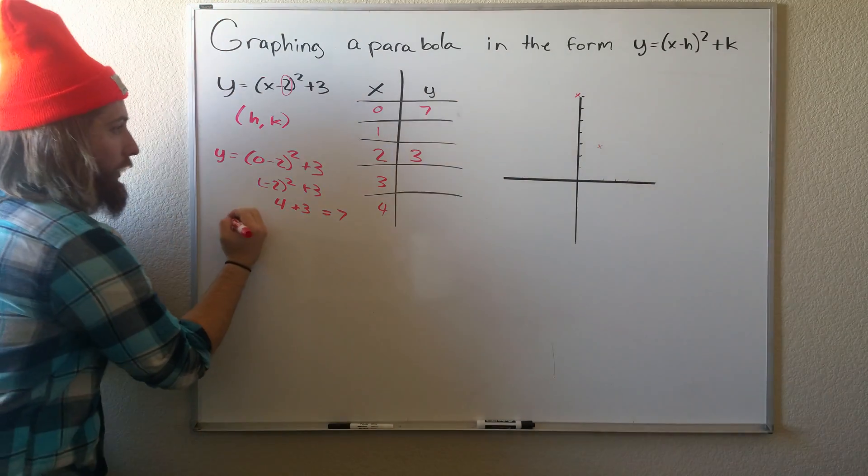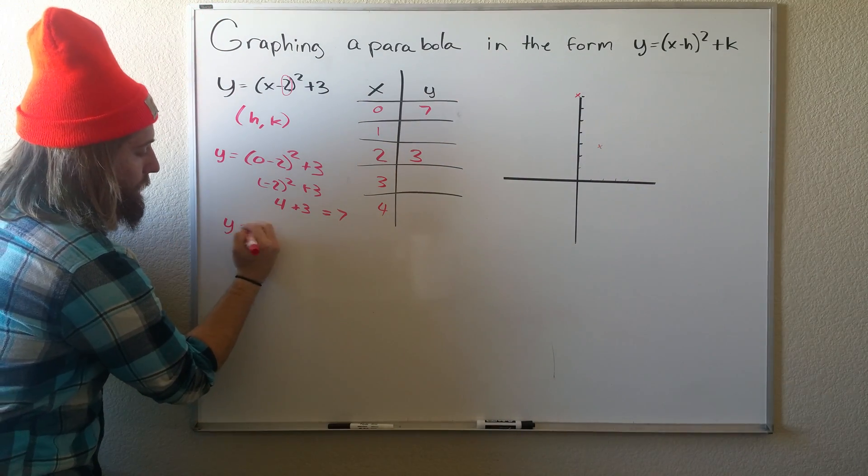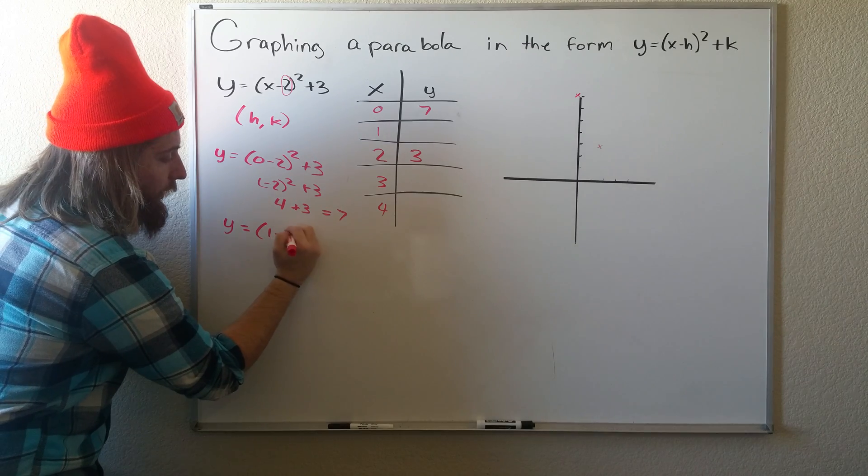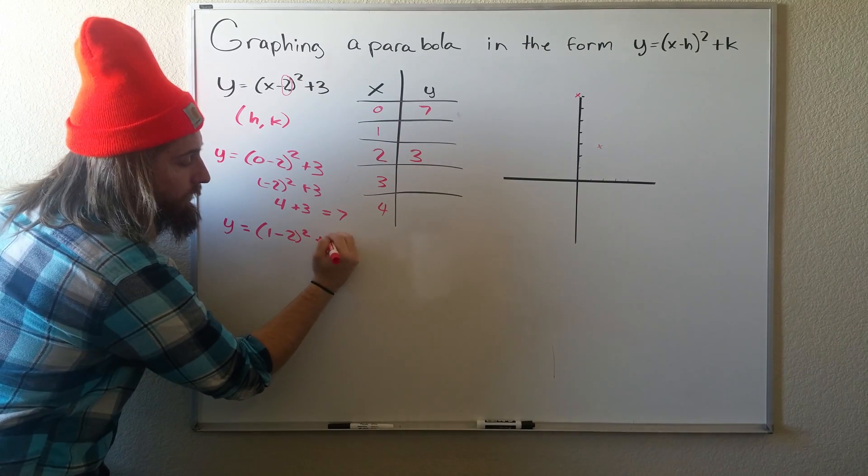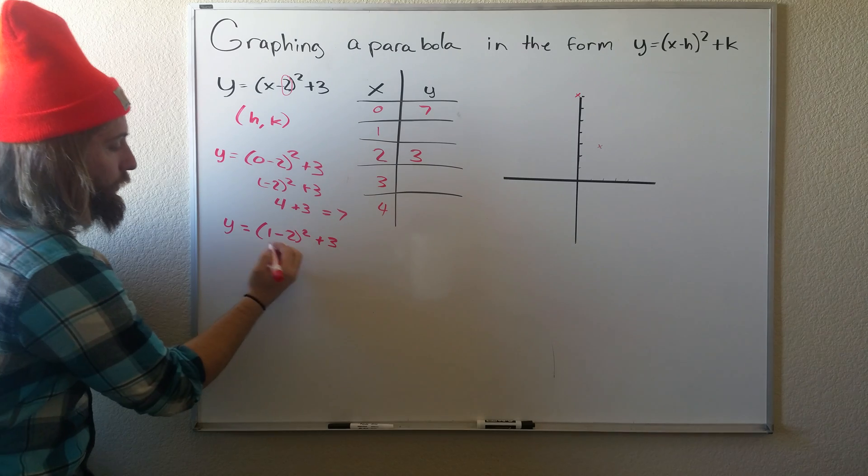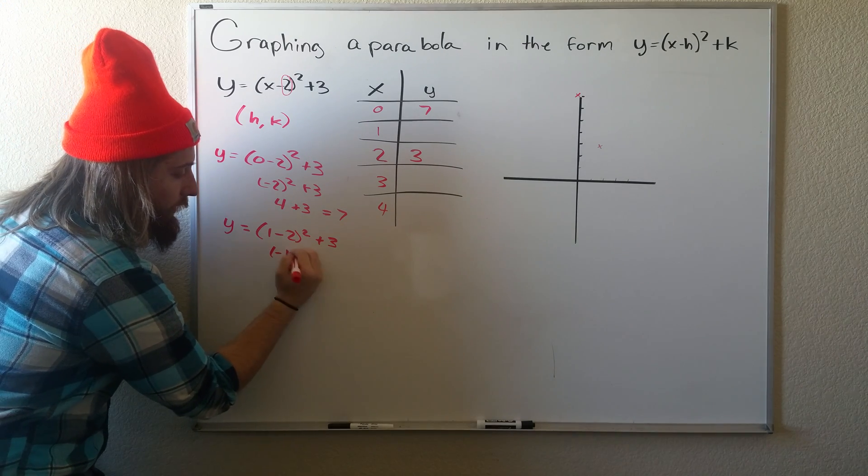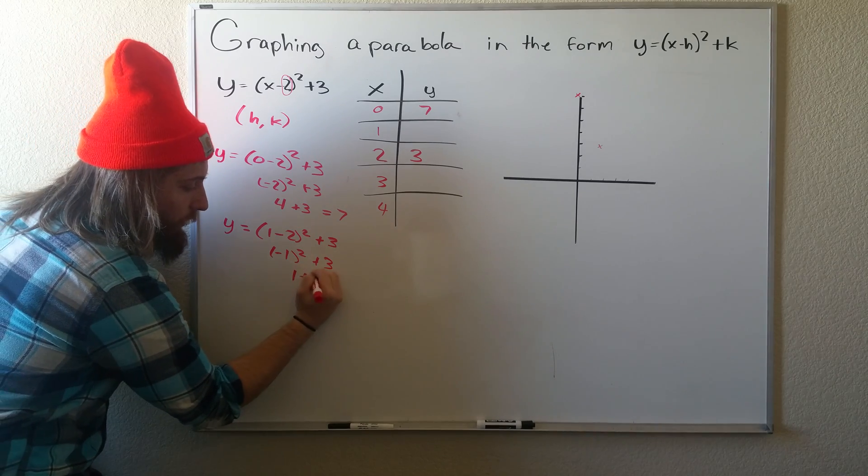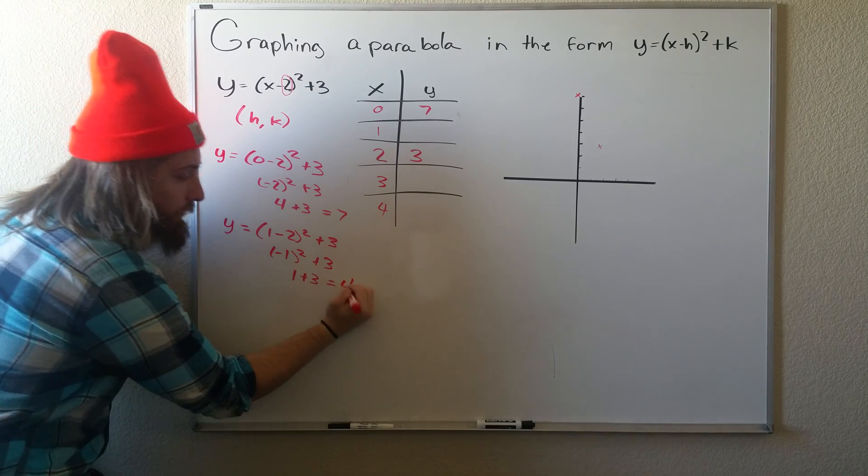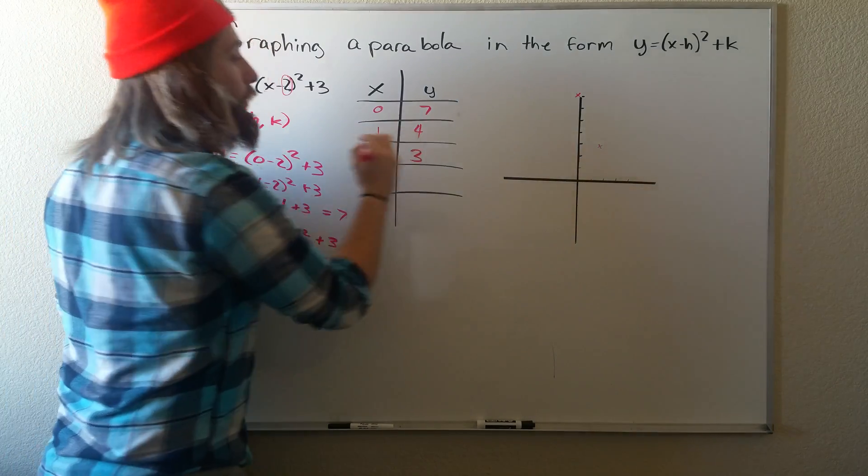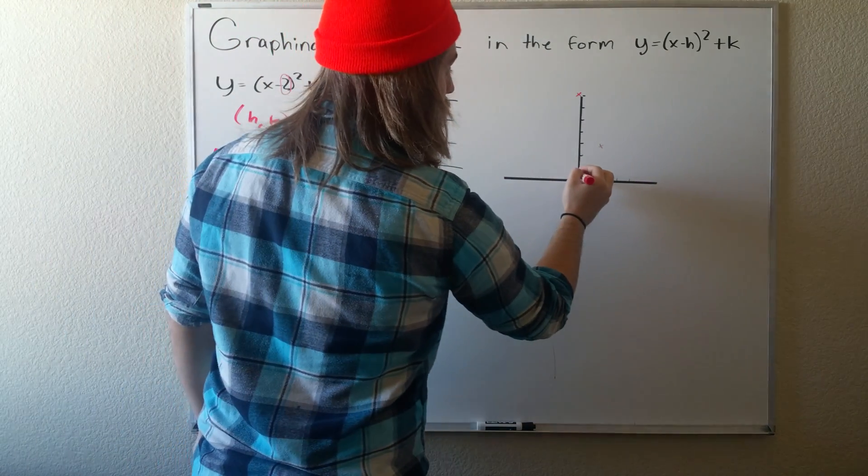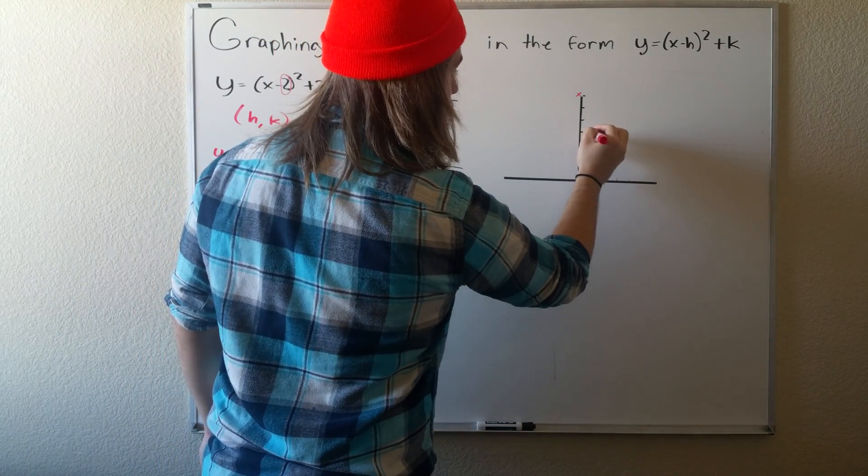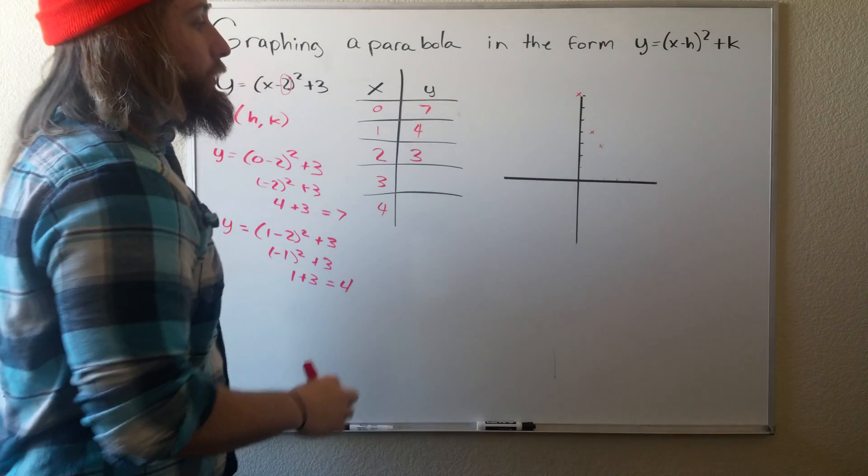And now we're also going to plug in 1. So now we do 1 minus 2 squared plus 3. So 1 minus 2 is negative 1 squared plus 3. Negative 1 squared is just 1. 1 plus 3 equals 4. So that's our second point. 1, 4. So we go up to 1, then 4. And that's our second point.